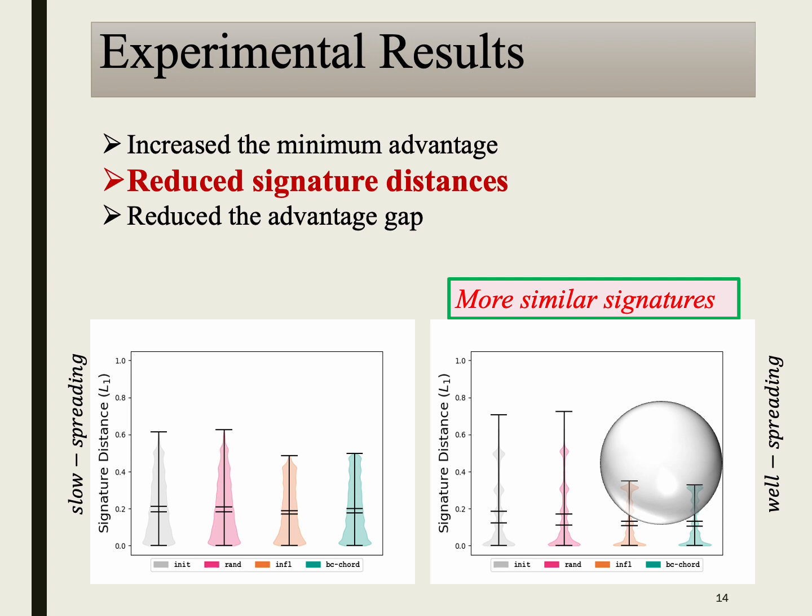Our second aim was to increase similarity among nodes' access signatures, enabling a more equitable view of the network for all nodes. This is crucial in combating the concentration of power and ensuring unbiased access to information. We plotted the violin distribution of signature distances, where a greater downward shift in the distribution indicates better heuristic performance. We observed that both the Influ and BC chord heuristics reduced the maximum signature difference and noticeably shifted the tail of the distribution downward.